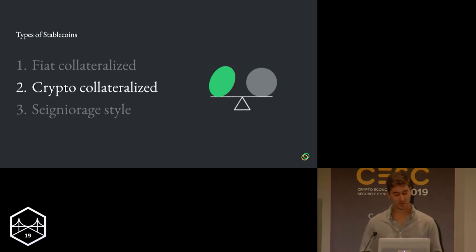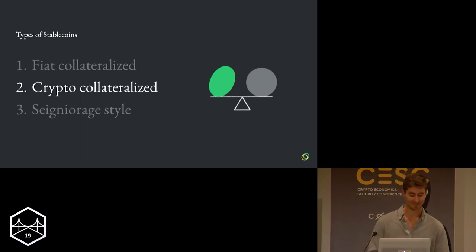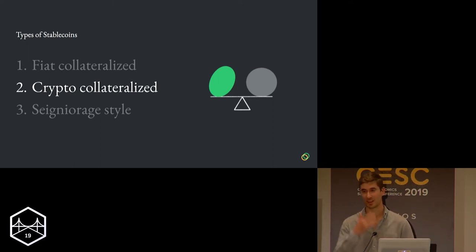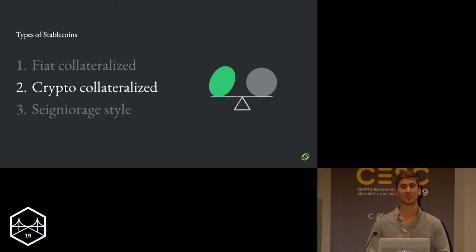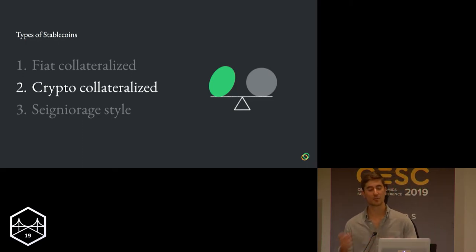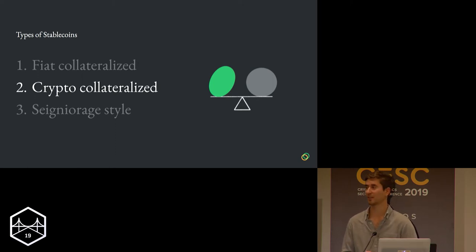Next, we have crypto collateralized stablecoins. Unlike fiat collateralized stablecoins, they are collateralized by crypto. The obvious example here is Maker. These are often done using loan instruments — in Maker, you put up some collateral and are able to borrow stable tokens in return. The obvious win here is that these systems are more decentralized than their fiat-based alternatives. But it comes at a few costs: one, complexity; two, the requirement of over-collateralization due to volatility in the underlying collateral; and three, you typically don't have this direct arbitrage cycle, so stability may be somewhat worse as a result.